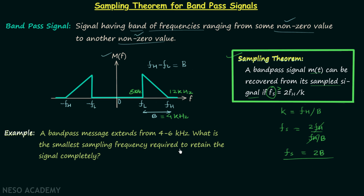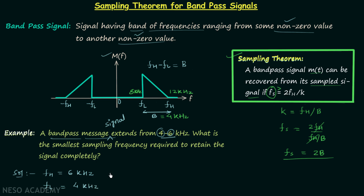We will now implement this using one example. We have a band-pass message signal extending from 4 to 6 kHz. This means FH equals 6 kHz is the upper cutoff frequency and FL equals 4 kHz is the lower cutoff frequency. The bandwidth is FH minus FL, so 6 minus 4 equals 2 kHz.